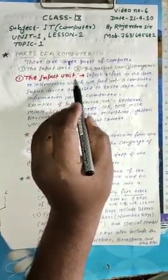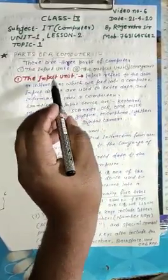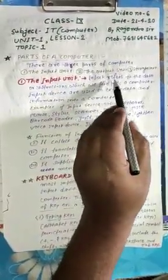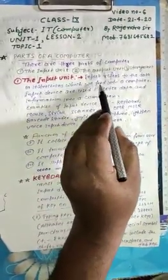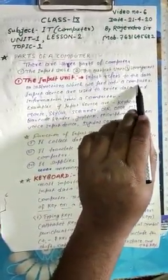Keyboard, mouse are input devices. Now, the input unit - input refers to the data or instructions which we feed into a computer.